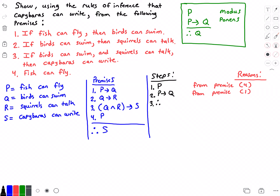For step three — therefore — q is true. I knew that by using the modus ponens rule on steps one and two, since p is true and p implies q is true, we can conclude q is true.